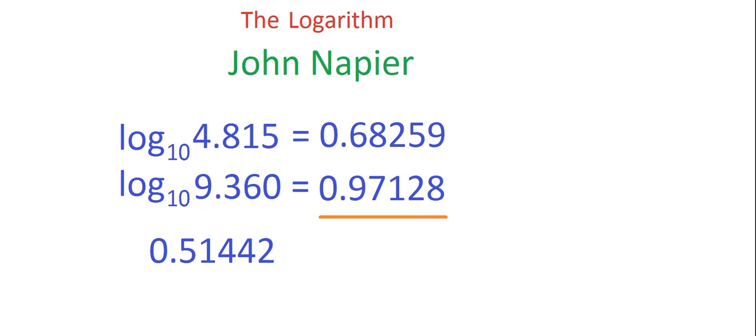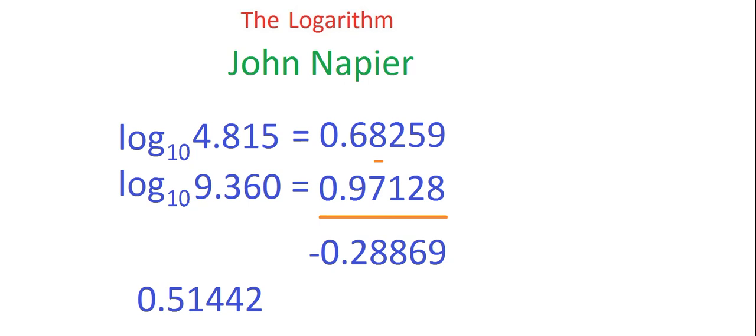Now Mr. Napier would also take the logarithms of each of these numbers again, but this time subtract. Subtract with the answer minus 0.28869.